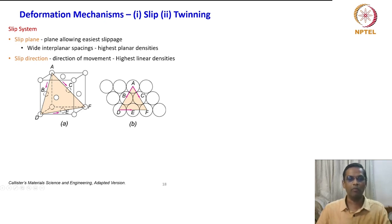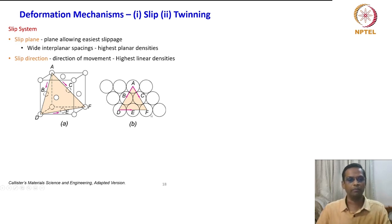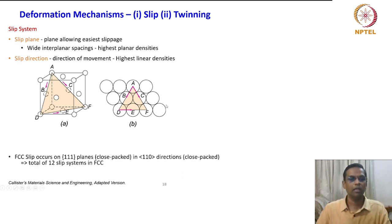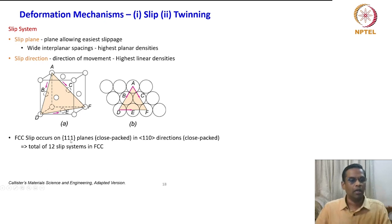In the planar top view from this corner, it will look like A, B, C. FCC slip occurs on {111} planes — the {111} is denoted by flower brackets, meaning it is a family of planes.